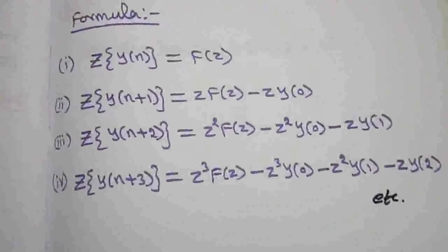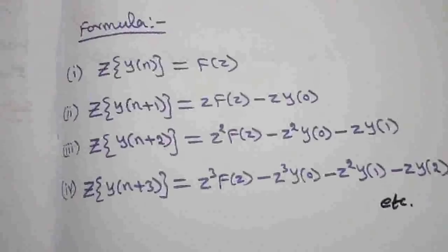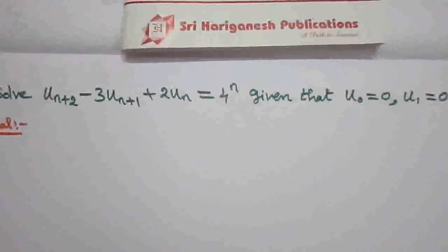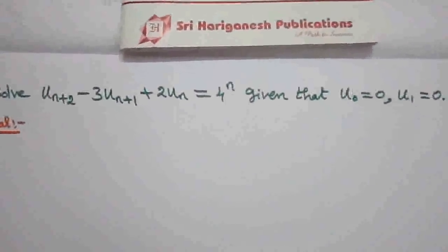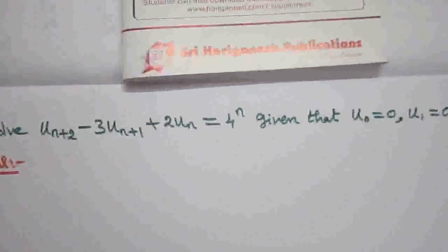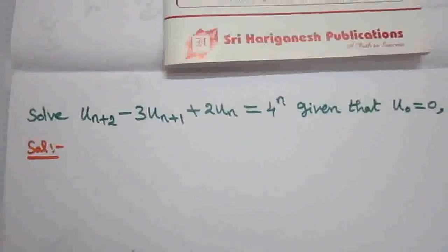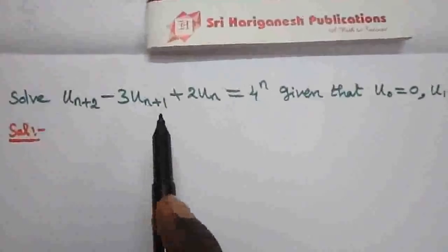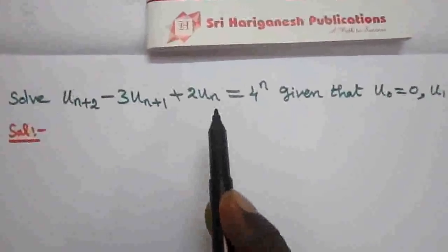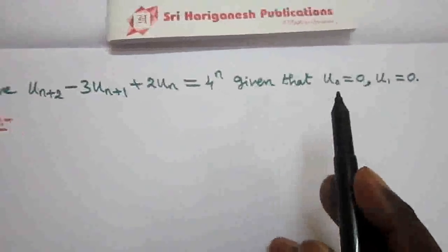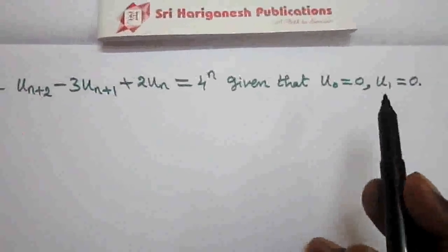Now, the first problem based on solving a difference equation using the Z-transform method. Solve: u(n+2) minus 3·u(n+1) plus 2·u(n) equals 4^n, given that u(0) equals 0 and u(1) equals 1.